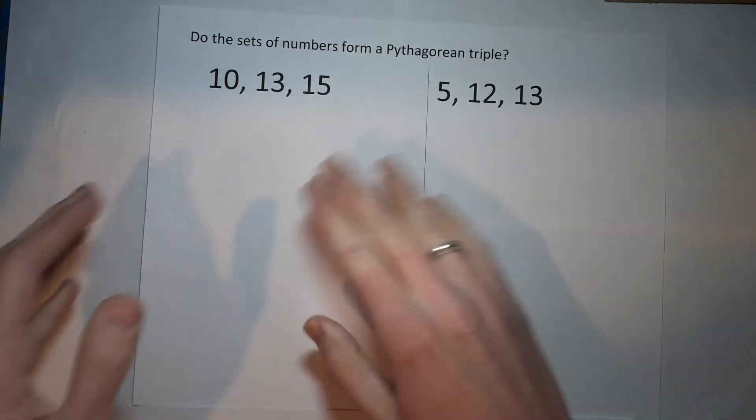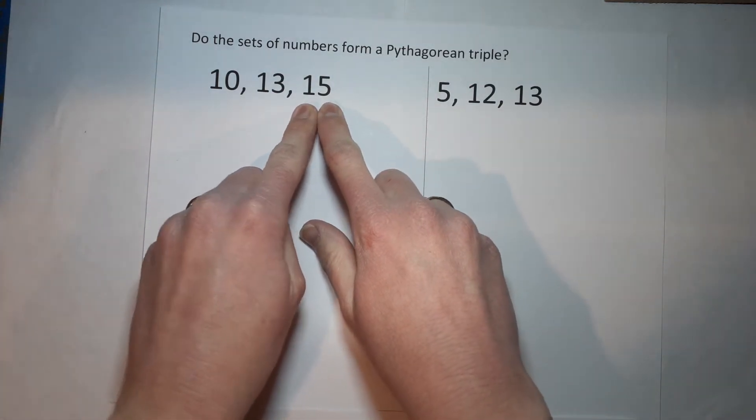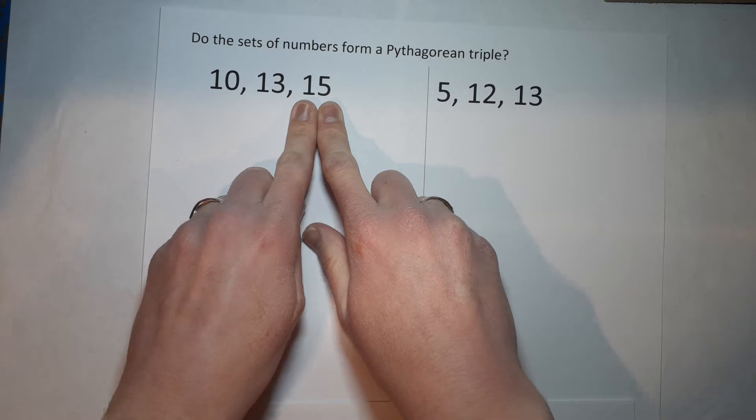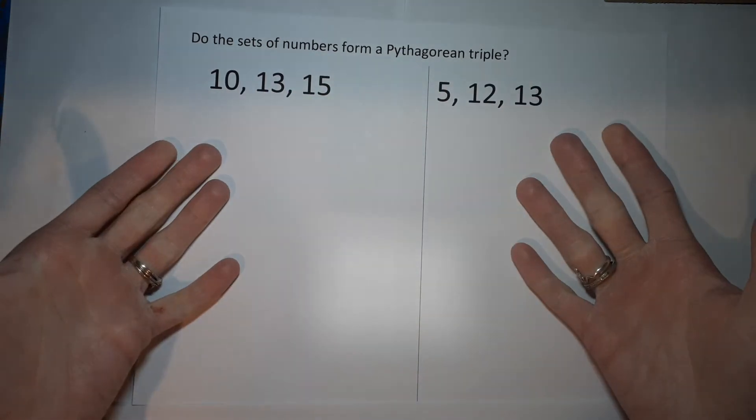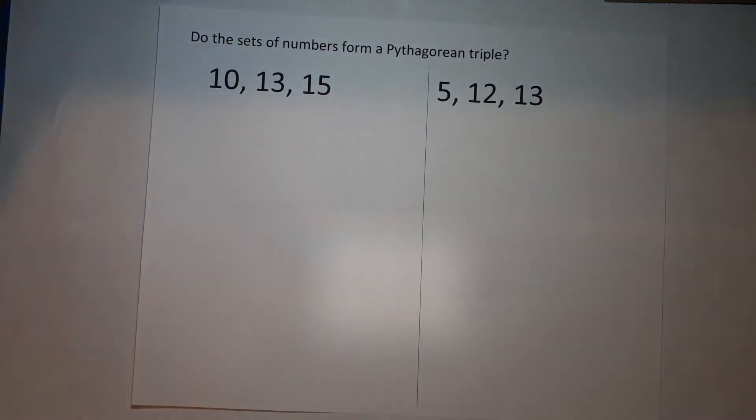If it is a right triangle, right? That's what we're trying to figure out—if these could be the sides of a right triangle.